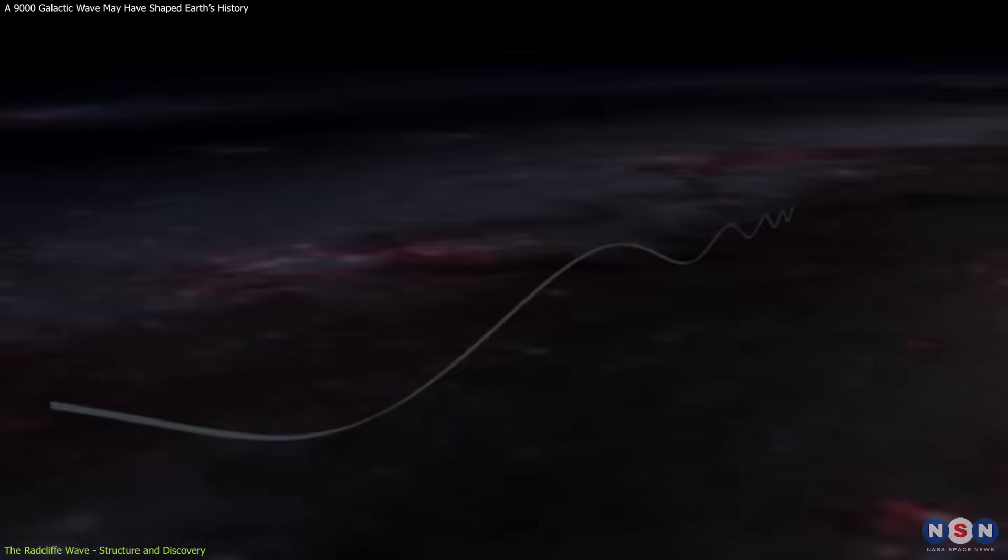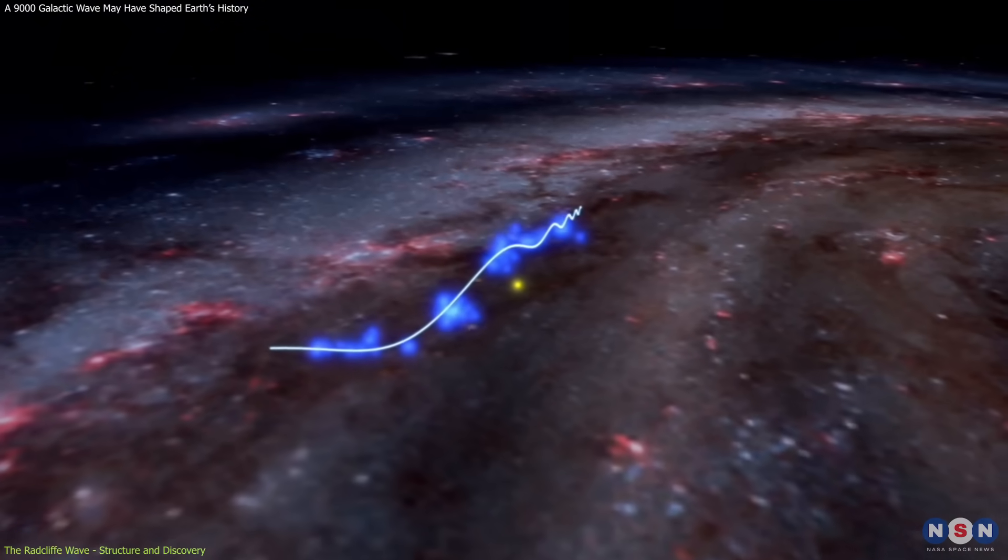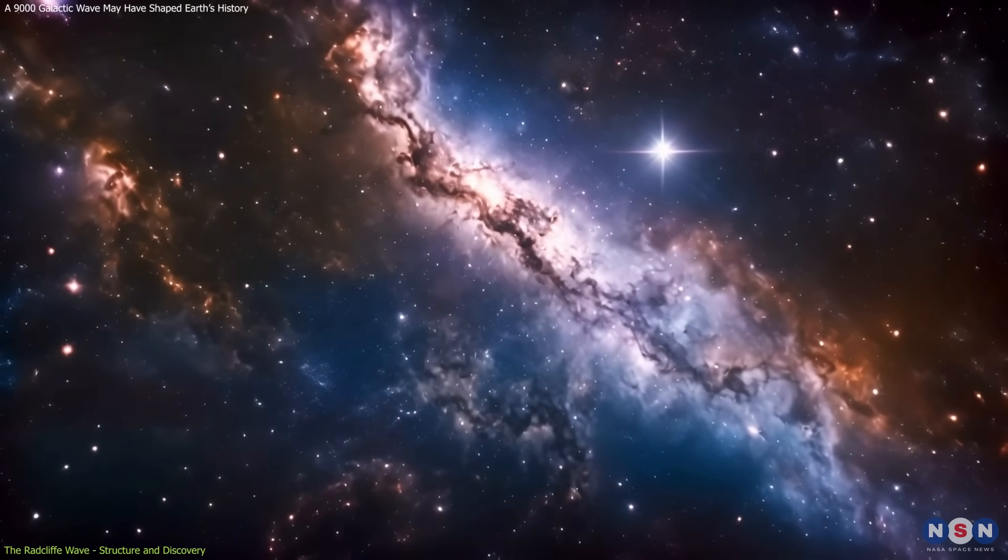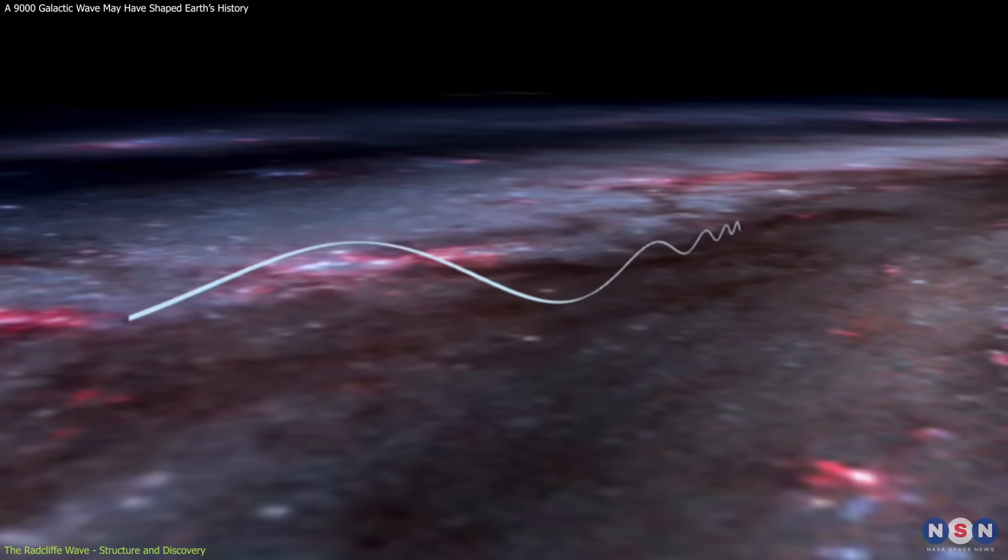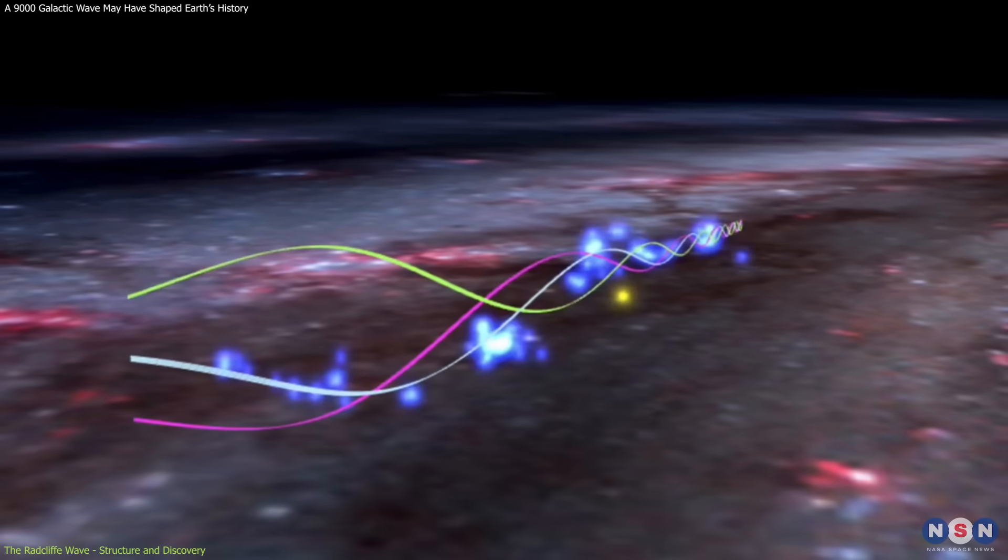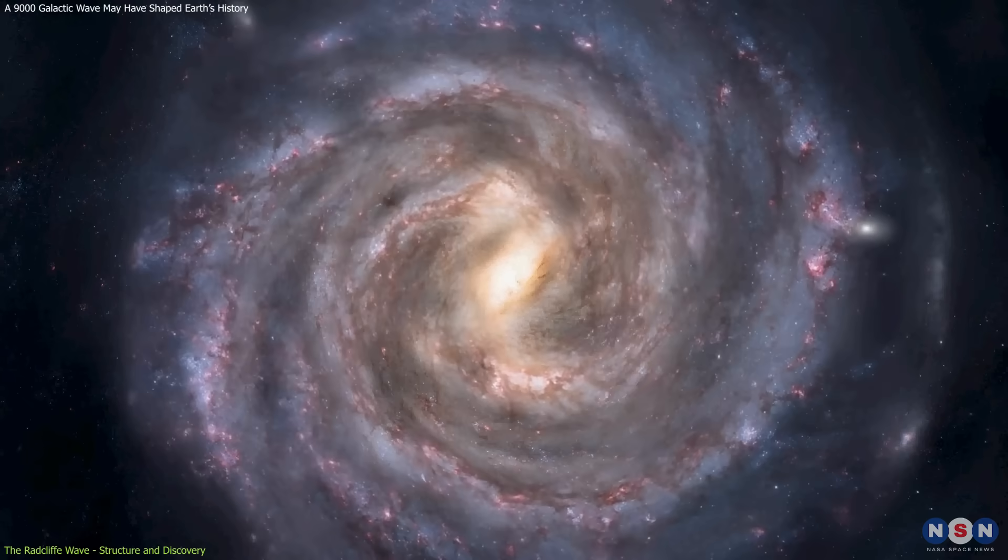Why does this matter? Studying such structures gives us insight into the forces shaping our galaxy. The wave-like pattern suggests that gravitational interactions, possibly with spiral arms, dark matter, or even past supernova explosions, may have sculpted the Radcliffe Wave.